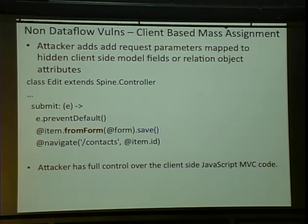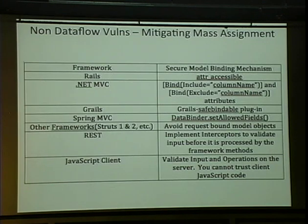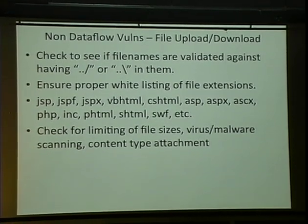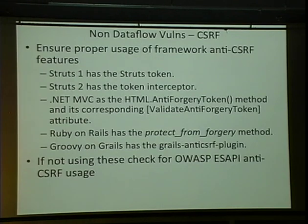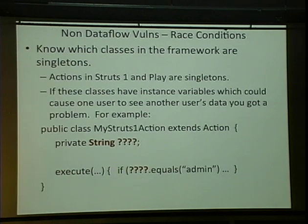I've got five minutes. Here's a reference chart for identifying mass assignment in different frameworks and languages — and how to mitigate it. File upload and download: common problems are file uploads happening in bad directories on the server. Cross-site request forgery: make sure they're using some type of CSRF mitigation in the framework — they all have them. Authorization and authentication: look at those interceptors where authentication and authorization occur because you can find backdoors, like where the developer says dev-mode equals true and all authentication is turned off.